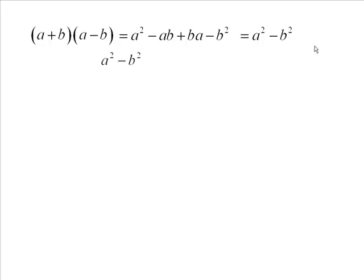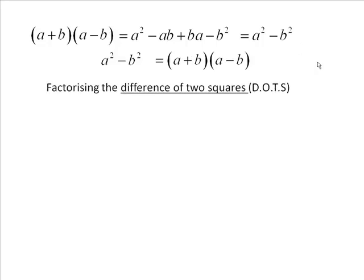We can do that in reverse. Factorizing a squared minus b squared gives us that pattern and that's what we call factorizing the difference of two squares. You should be familiar with that.